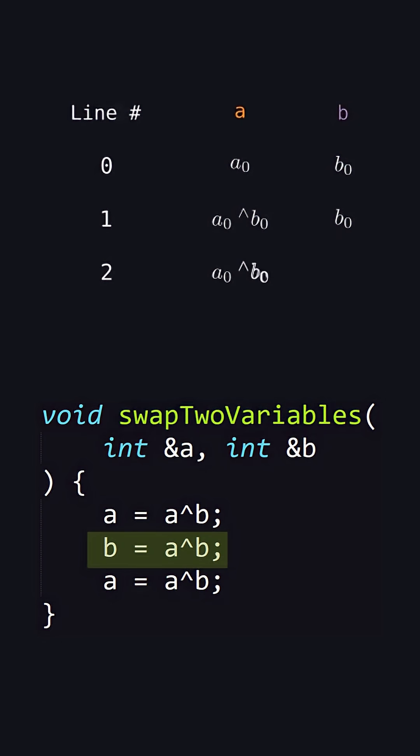Then we set B equal to A XOR B. Remember, A currently stores A XOR B from the first line. So B equals A XOR B XOR B. From about 10 seconds ago, I told you anything XORed with itself gives zero. So this B XOR B part cancels and we are left with B equals A XOR 0, which is just the original value of A.